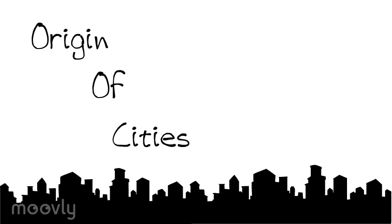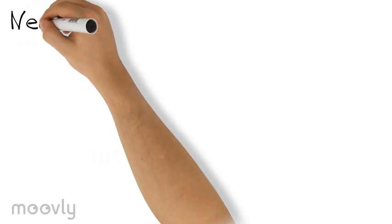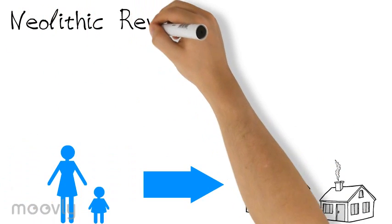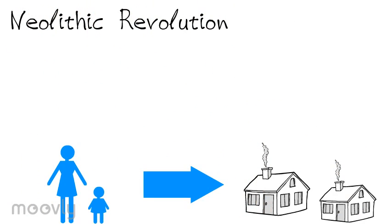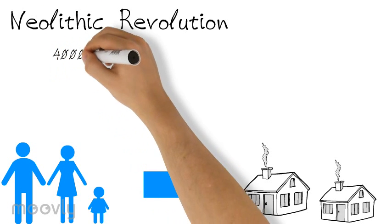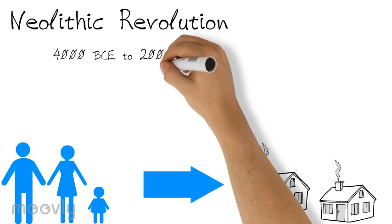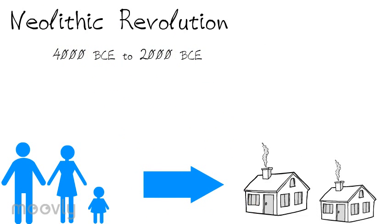Origin of cities. Permanent settlements started to come around the Neolithic Revolution, or the first agricultural revolution, since now they had a steady supply of food for them to eat. This era was called the Formative Era, which was between 4000 BCE to 2000 BCE.